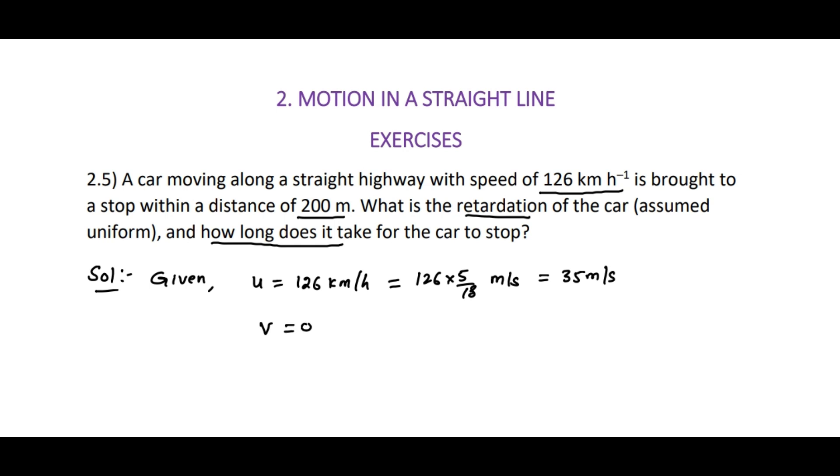So with this speed the car is moving. Finally it is coming to rest. How can we say? It is brought to stop, so final velocity v is zero. Distance traveled s is 200 meters. So there is a car starting with initial velocity 35 meters per second, traveling a distance of 200 meters, and finally coming to rest. Now what is the retardation of the car?